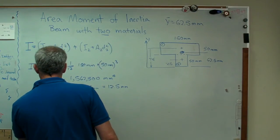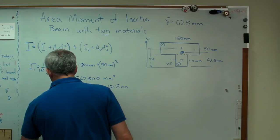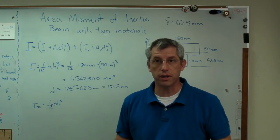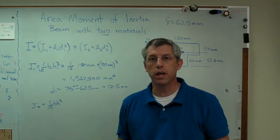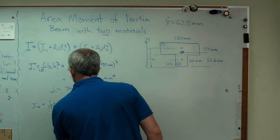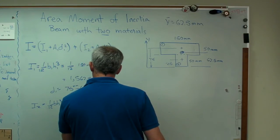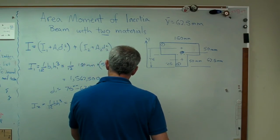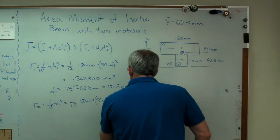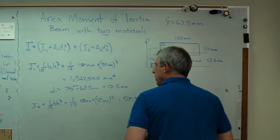I2, 1/12 B H cubed. This is getting kind of routine, huh? Routine's good. When a calculation becomes routine, that's good. That means that you're so used to it, you've internalized it. It's not new anymore. Hopefully, it doesn't get boring, but routine is good. That means you're learning. Become comfortable with it. So this one's easy, 50 millimeters times 50 millimeters cubed, and that's going to turn out to be, let me see, 520,833 millimeters to the fourth.